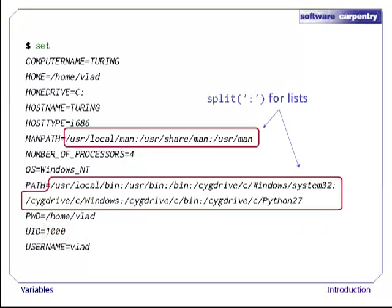Some variables store lists of values. Here, the convention is to use a colon as a separator. If a program wants the individual elements of such a list, it's the program's responsibility to split the variable's string value into pieces.